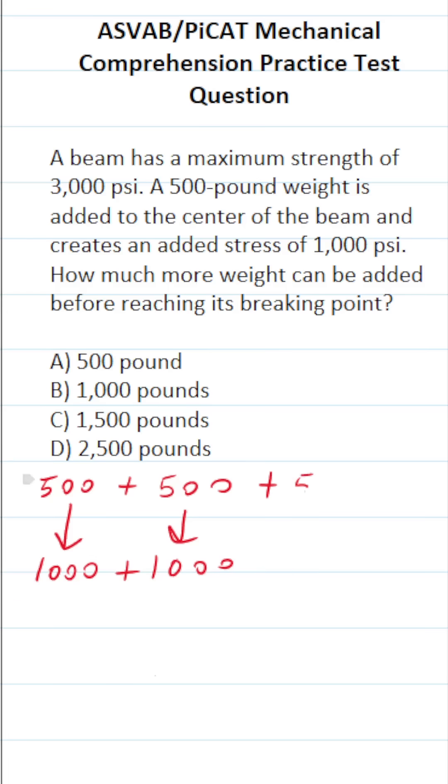Let's go ahead and add another 500-pound weight. And of course, you already know that's going to equate to another 1,000 PSI of pressure. So right now, we have 1,500 pounds of weight.